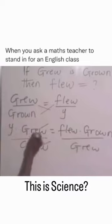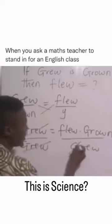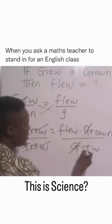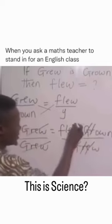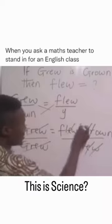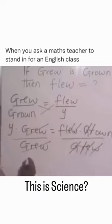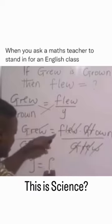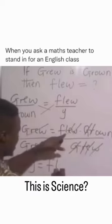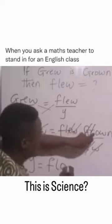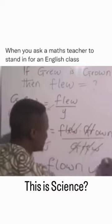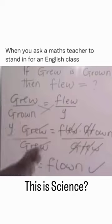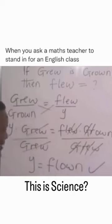That grew will cancel grew. G will cancel G, R will cancel R, E will cancel E, W will cancel W. So Y is F-L-O-W-N. Therefore, the past participle of fly is flown.